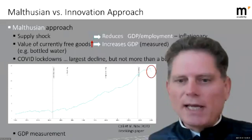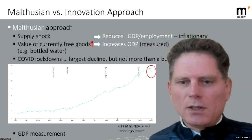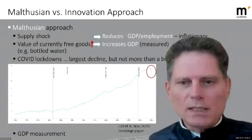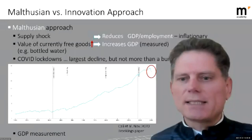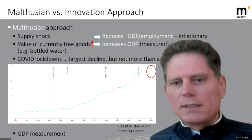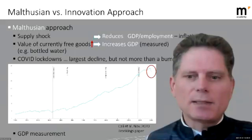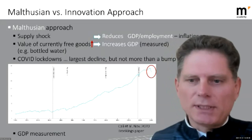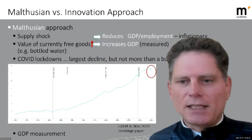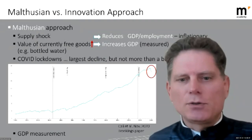In general, there are two approaches: a Malthusian approach and an innovation approach. The Malthusian approach is essentially a huge supply-side shock — we produce less, cut back on consumption, which reduces GDP and employment, and it's also inflationary. On top of that, some goods that are currently free might become costly, like clean water. This also raises questions about how we should measure GDP.